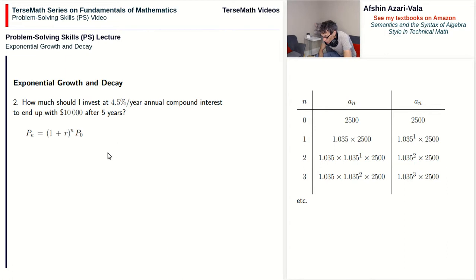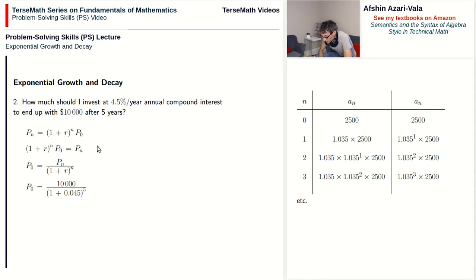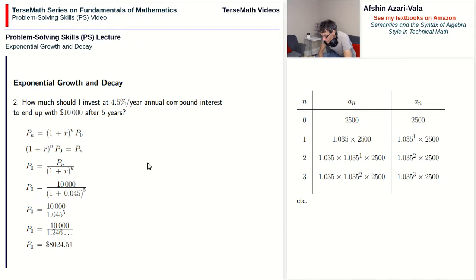p₀ is missing. We know pₙ — it's the ten thousand dollars I want at the end. We solve the equation for p₀: switch sides, solve for the factor containing the unknown, then put in the given values. pₙ is ten thousand dollars, the rate of interest is 4.5 percent which is 0.045, and n is five years. We work out the divisor and then divide. So I need to put in eight thousand and twenty-four dollars and fifty-one cents so that in five years I will have ten thousand dollars.